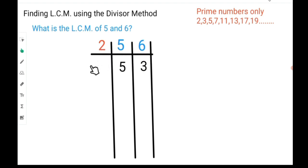If 2 could be used again, we would use 2 in this line. But in this case, it can't be used again. Therefore, we move to our next prime number, which is 3. Can 3 go into 5 without leaving a remainder? No, it can't. But it can go into 3, so we still use 3. Three into 5, it can't, so we put back 5 as is. Three into 3 goes one time.